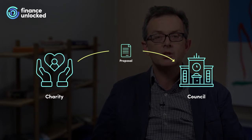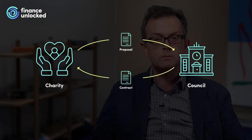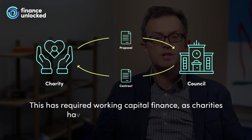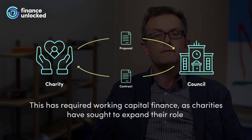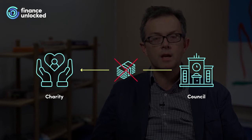Charities and social enterprises have moved into services previously provided by government. They have tendered for contracts with local authorities, which act as commissioner and obligor. Under these contracts, the charity now delivers services to the vulnerable. This has required working capital finance as charities have sought to expand their role. Further complicating matters, local authorities and other commissioners have delayed payments under these contracts and borne down on any profit margin that might be extracted by the charity. Sometimes they have introduced payment by results contracts. In short, the financial requirements of charities have increased as grant funding has dried up. This is where social investment has stepped in to take up the slack.